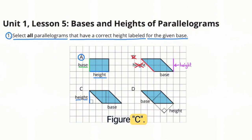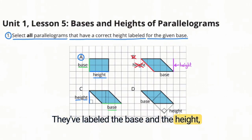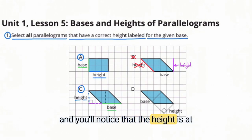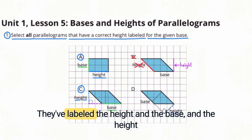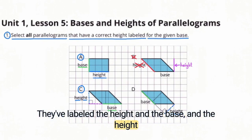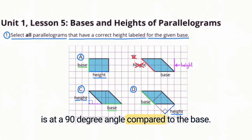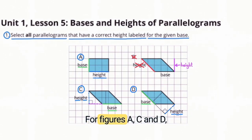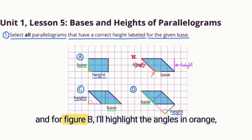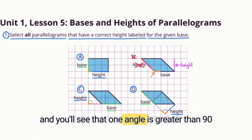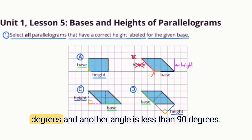Figure C: They've labeled the base and the height, and the height is at a 90-degree angle compared to the base. Figure D: They've labeled the height and the base, and the height is at a 90-degree angle compared to the base. For figures A, C, and D, I'll highlight the 90-degree angle in yellow. For figure B, I'll highlight the angles in orange — one angle is greater than 90 degrees and another is less than 90 degrees.